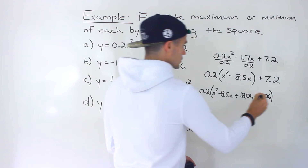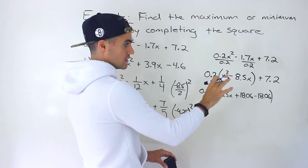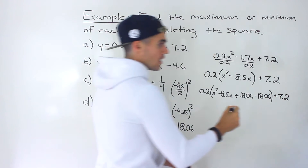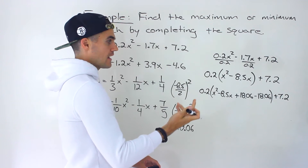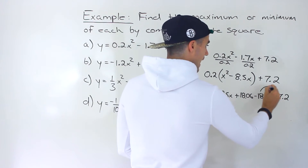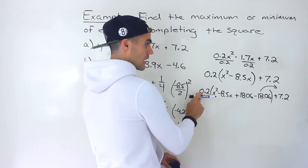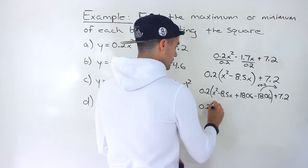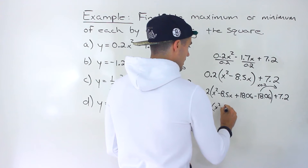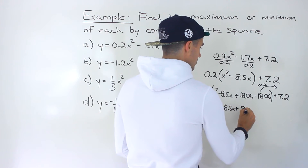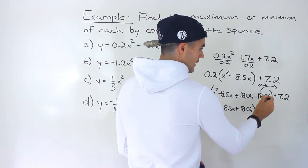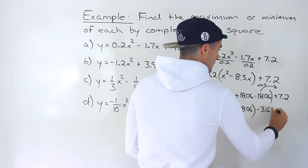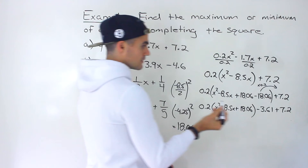The next line: we rewrite and add 18.06, but we also subtract it so we're not changing the expression — that's just adding zero. Then we take the negative 18.06 outside the bracket, but we have to multiply it by the value in front, which is 0.2. So negative 18.06 times 0.2 gives us approximately negative 3.61, and then we still have the plus 7.2 at the end.